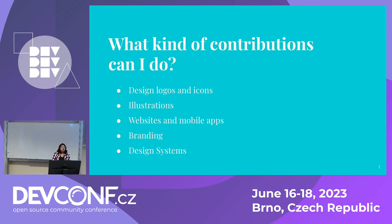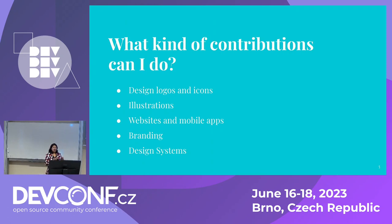What kind of contributions can be done? There are a lot of types of designers. Graphic designers can get started with designing logos and icons. Artists and illustrators can do illustrations. UI/UX designers can design websites and mobile apps. Designers can also help in branding and design systems — not to confuse design systems with system design. A design system is like a guide or a collection of details about a particular project, such as what font and colors are used.